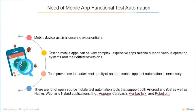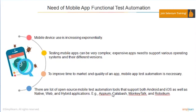Mobile devices are increasing exponentially and testing mobile apps can be very complex and expensive. Apps need to support various operating systems and versions. There are open source tools like Appium, Calabash, MonkeyTalk, and Robotium. The ideal advantage of Appium is it can accept multiple languages, whereas Calabash cannot. Just as Selenium supports six programming languages, Appium supports those same languages.